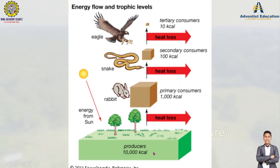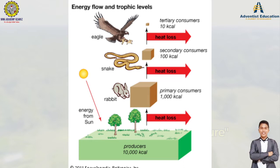From the 10,000 kilocalories, only 10 percent of the total energy will be transferred to the primary consumer. Just a very little — only 10 percent. So the primary consumer, which is the rabbit, only receives 1,000 kilocalories. The rabbit eats the carrot, and the carrot is a producer because it can perform its own food production. So only that 10 percent of energy is transferred.